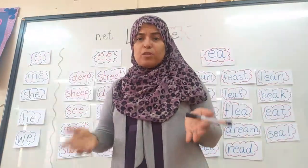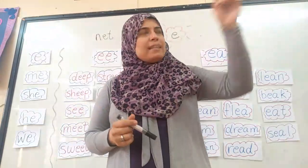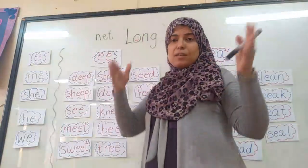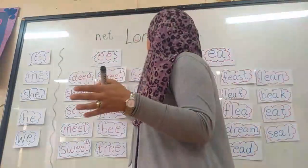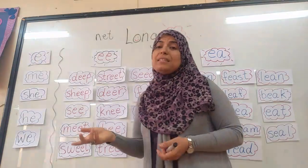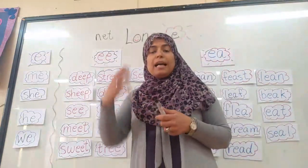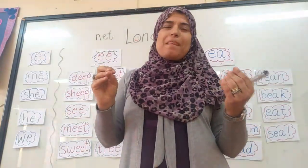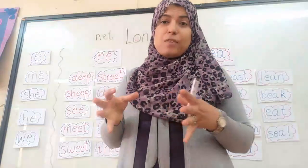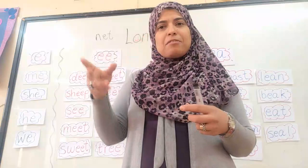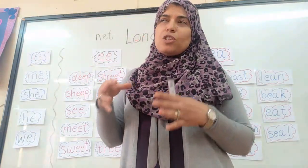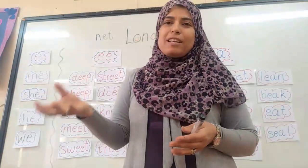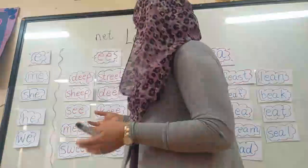Then S-T-R-E-E-T: street. Which street do you live in? The street is the place where you live, with the buildings. Then D-E-E-R: deer. The deer is the animal that lions and tigers like to run after to eat. It's a very nice, cute animal. The deer runs very fast, but because she's always looking behind her, that's why the tiger or lion can catch it.